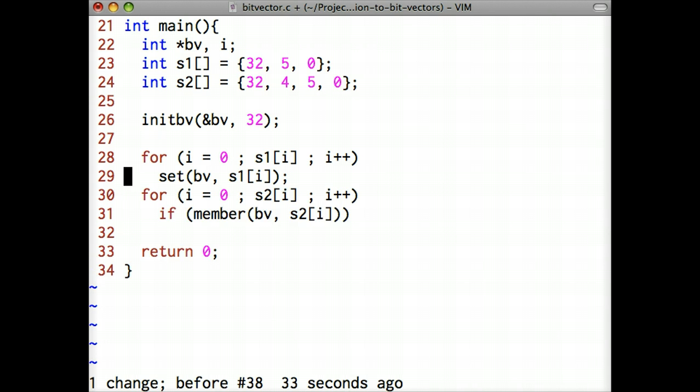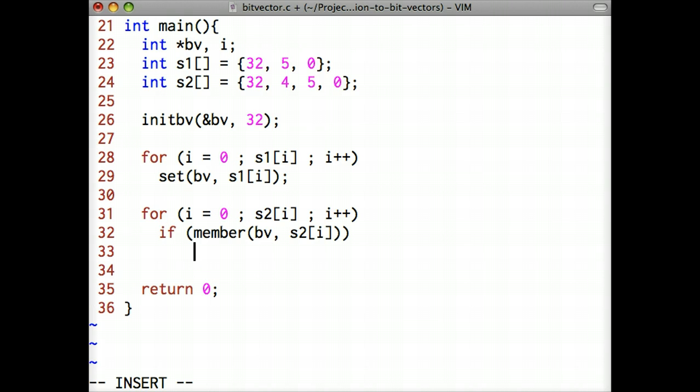We can now use bv to efficiently determine which integers are in S1. Our next step is to iterate through S2. If in the for loop we find an integer in S2 that is a member of the bit vector, we print the integer.